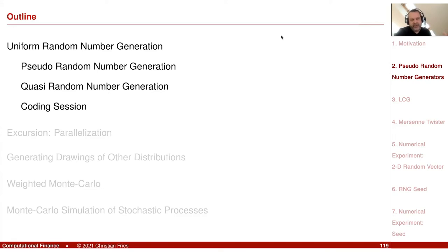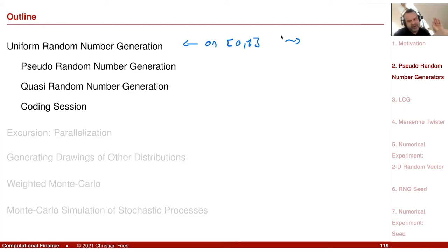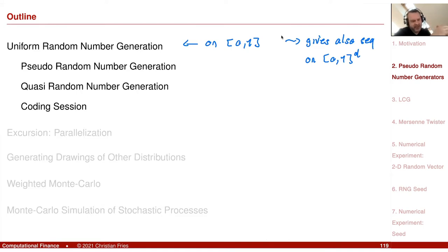I will start with the pseudo-random number generator. Recall the Monte Carlo method applied as an integration rule — Monte Carlo integration. We started by looking at random numbers on [0, 1]. If you have a one-dimensional sequence, you can generate a sequence on a multidimensional space by just populating the components. This gives sequences on [0,1]^d. We will look later at how to generate other distributions, different from the uniform one. For Monte Carlo integration, it was sufficient to consider sequences that are uniform on [0, 1].